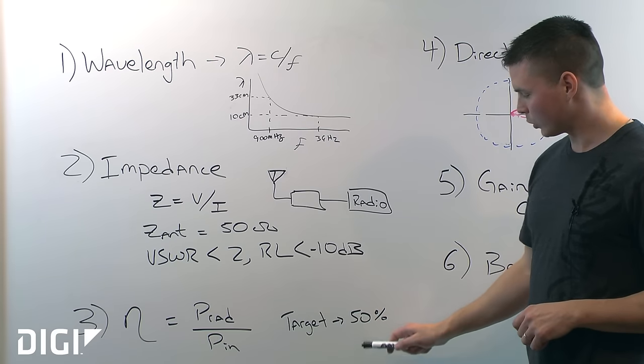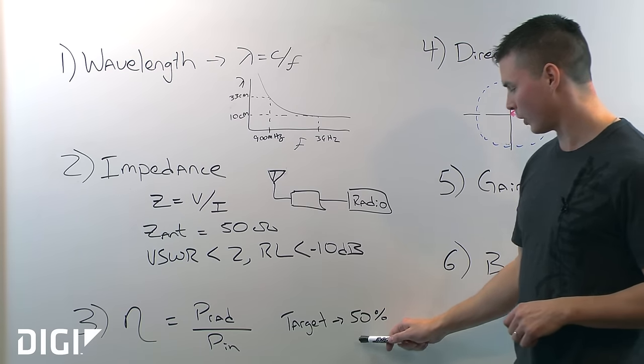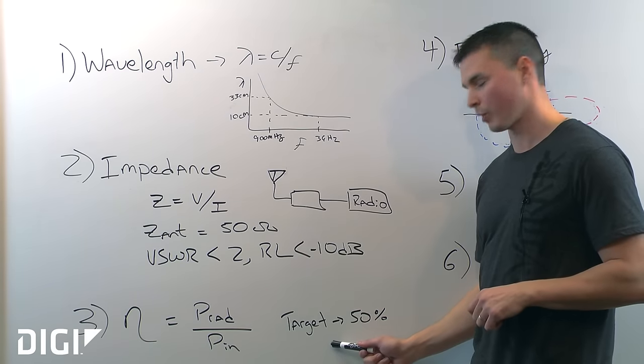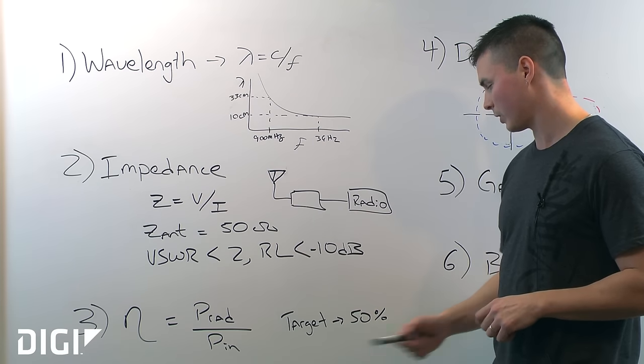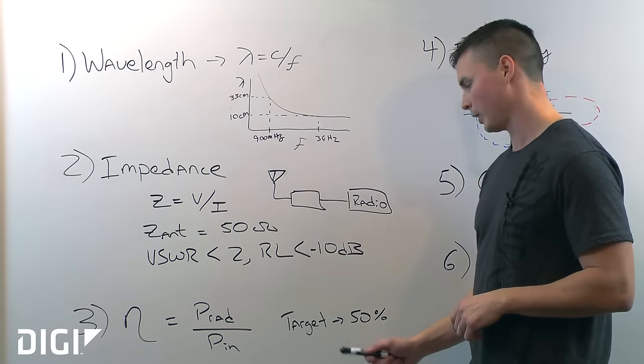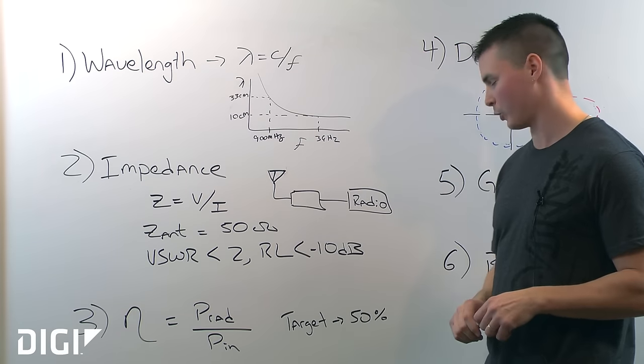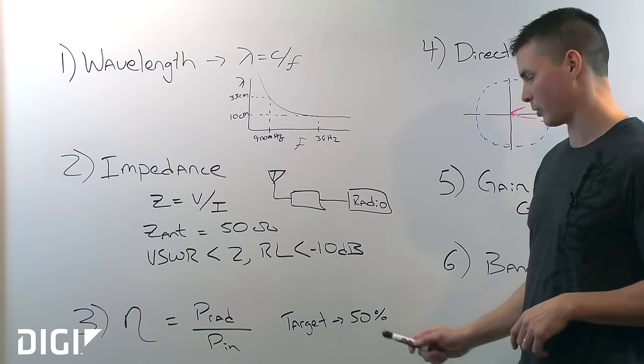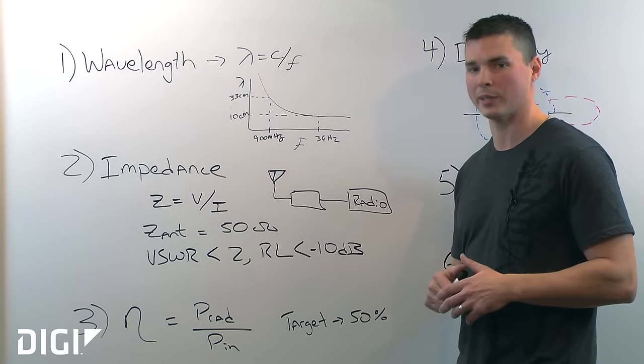Your target or goal should be somewhere around 50%, but just know that this is highly dependent on the RF environment and the ground plane of your device. If your ground plane is a lot smaller than the evaluation board of the antenna, you're going to see this number drop considerably. If you have absorbers like batteries or human tissue next to your antenna, this number is going to drop considerably in your implementation.